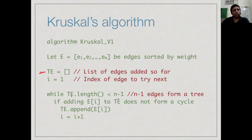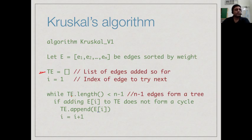Once we have n minus 1 edges we can stop. So long as the length of the tree in terms of number of edges is not n minus 1, we have to add more edges. We look at the next edge ei; if ei does not form a cycle when added to T, we append it and increment i. If it does form a cycle we just discard it and go ahead. This is all Kruskal's algorithm: scanning through all edges until we have formed a tree, adding each edge in ascending order of weight if it doesn't form a cycle, otherwise dropping it.